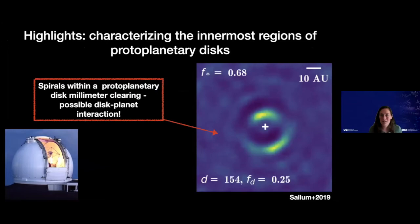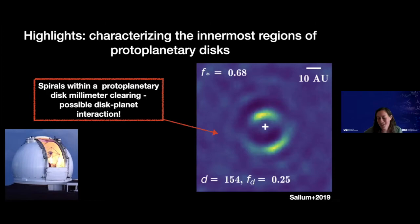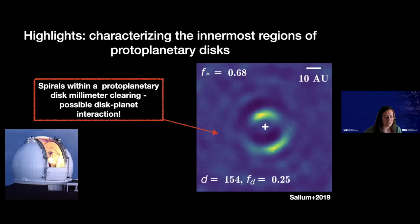Another highlight that falls out of looking for forming planets is characterizing the innermost regions of these protoplanetary disks. One cool result from my group in the last year or so is detecting spiral structure within a disk millimeter clearing. We're seeing scattered light from small grains that are inside the cleared region of your protoplanetary disk that you see in the millimeter. The idea is that you have little grains inside your big millimeter hole, and you see some spiral structure that's actually very different from the structure of the millimeter disk. This is a sign of a possible disk-planet interaction — some nice science that falls out of looking inside these disk clearings.